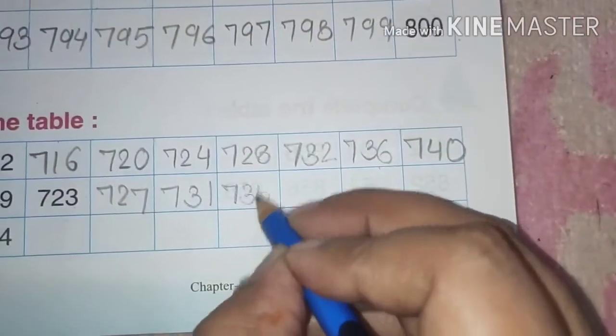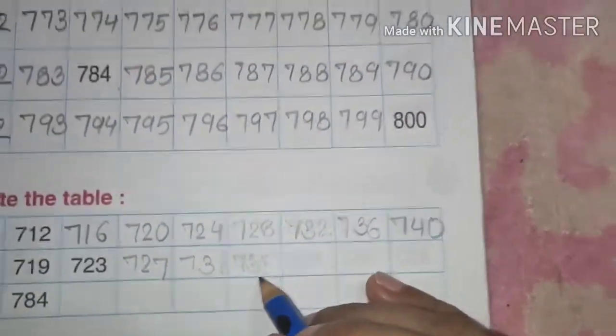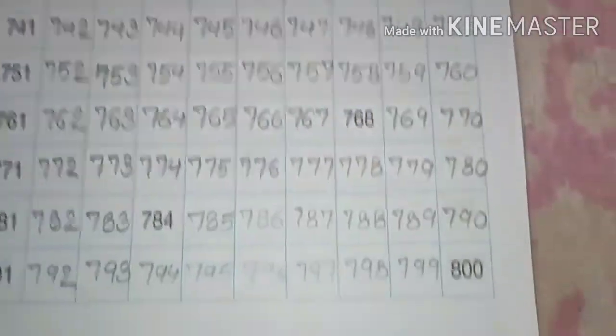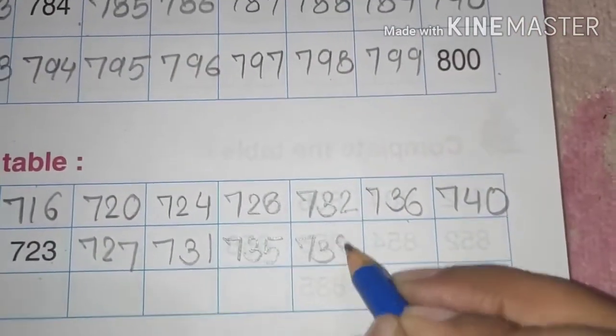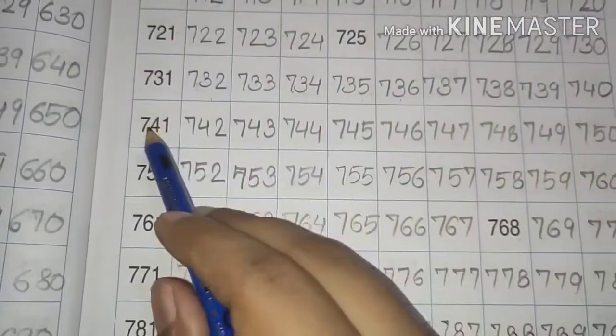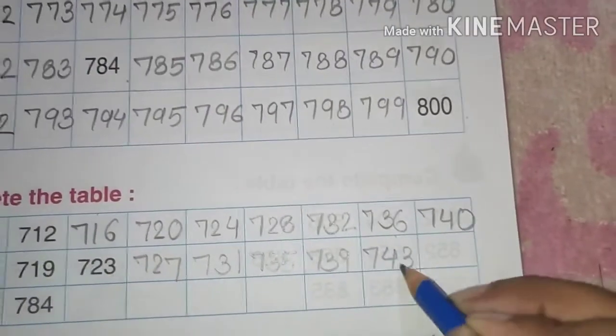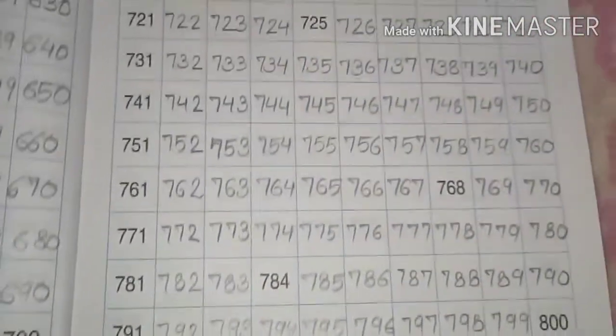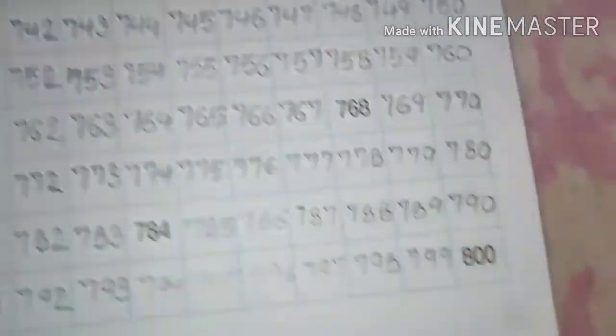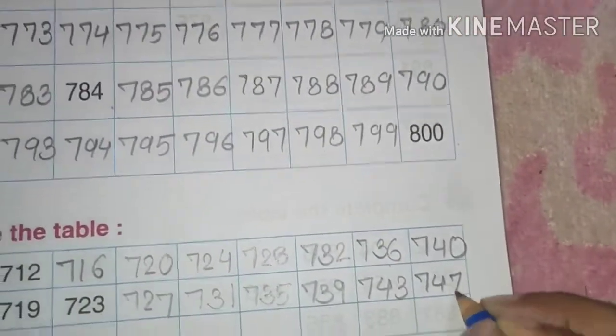Aap isko ek easy way me aur kar sakte ho. Aap is me har bar 4 plus kar do. 735 yaha. 1, 2, 3, 4. We have 739. 739, 1, 2, 3, 4. We have 743. Jis par bhi 4 aega woh number aapko likhna hai. 743. Then 1, 2, 3, 4. So we have 747.